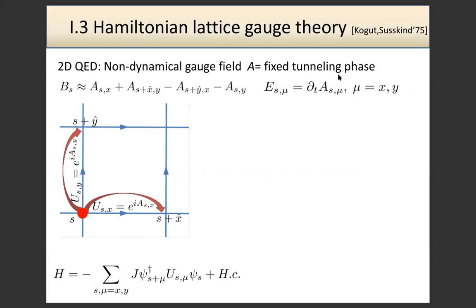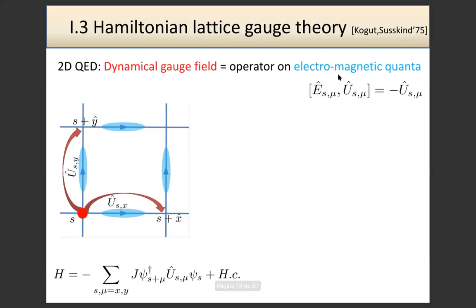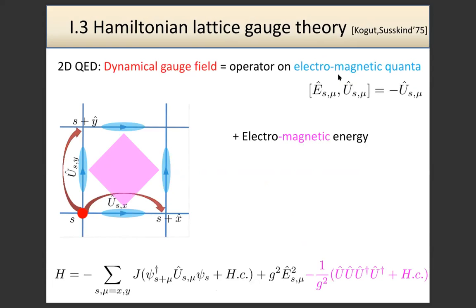If we want to study a genuine lattice gauge theory, we should promote some of these fields to be quantum — equivalent to having matter living on the links representing the gauge field. We then have the Wilson operator, which becomes an operator with the right commutation relations — it is the conjugate variable to the electric field. We also need to add the dynamics: an electric term plus a magnetic (plaquette) term. This is exactly the parallel construction to what you get in a tensor network approach, but now as an operator.